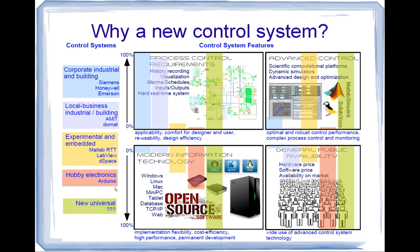Finally, hobby electronics systems like Arduino have no support for process control requirements — if you want alarms, special inputs, outputs, or visualization, you have to build and program everything manually. They support different kinds of information technology across all three systems, and smaller computers can be used. Advanced control is again difficult — you have to program everything with no built-in support. The big advantage is general public availability: hardware is cheap, software is free or cheap, and anyone can buy it.